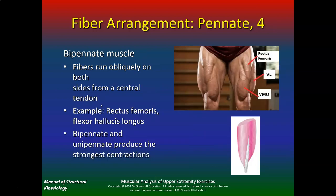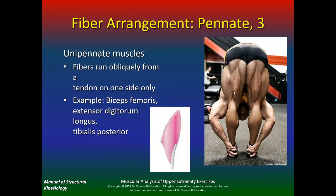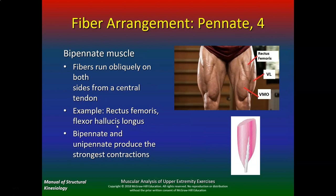Bipennate muscles — fibers run obliquely on both sides from a central tendon. An example would be the rectus femoris. Here's a good quiz question: the bipennate and unipennate arrangements usually produce the strongest contractions. So your rectus femoris is strong and your hamstrings are definitely strong.